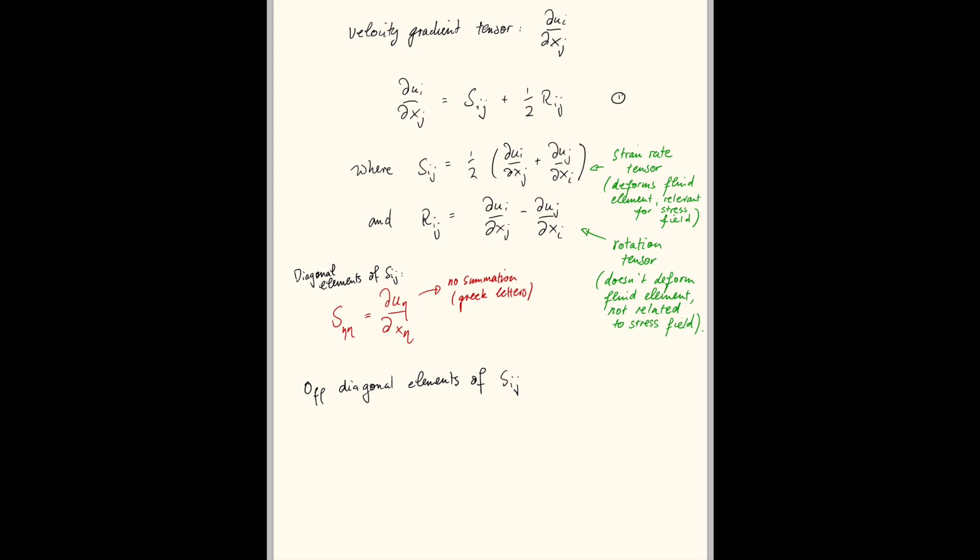Today we'll look at the off-diagonal elements of Sij. I'll say this now, these are the shear strains, and there's no elongation associated with these. Elongation is purely due to S11, S22, and S33.